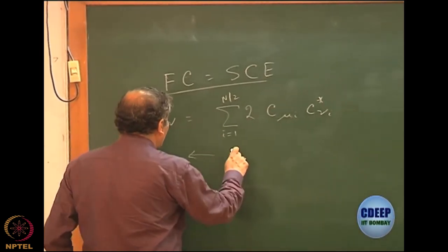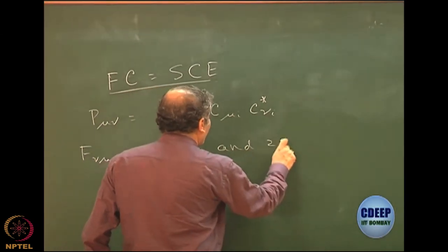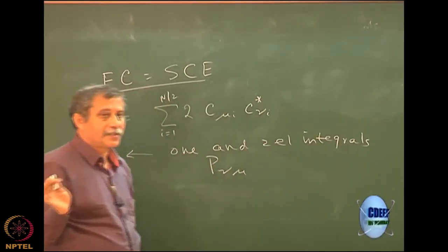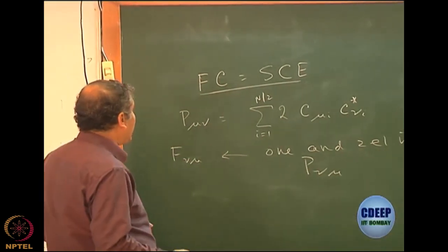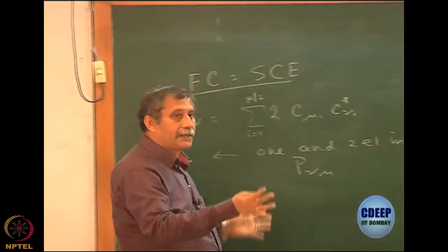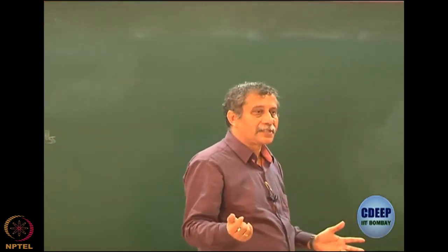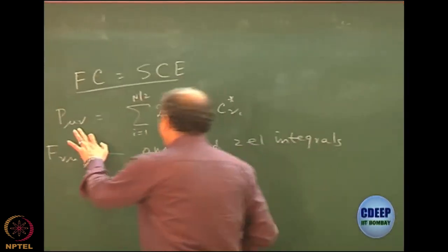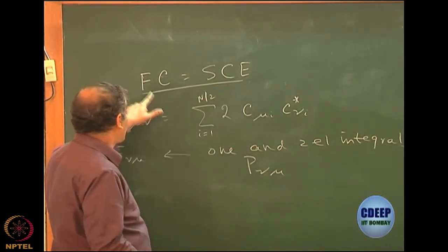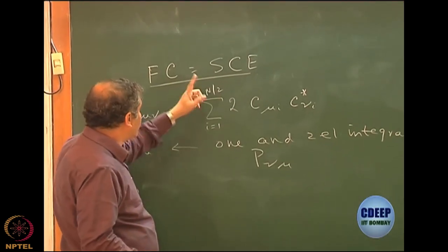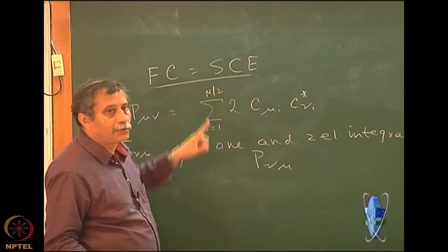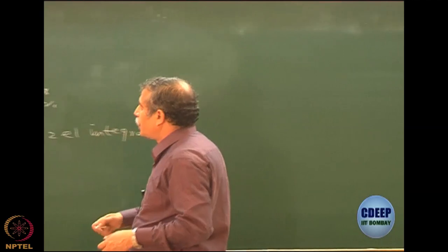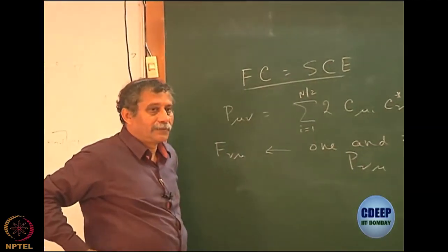We write F in terms of the 1 and 2 electron integrals, and P_μν matrices — the charge density bond order matrices. Once you write this, the question is how do you solve it? The iterative method starts from a Born-Oppenheimer geometry, choice of basis set, then calculate the 1 and 2 electron integrals, guess P, construct the Fock matrix, solve the equation, get new coefficients, construct P again, and continue until it converges.